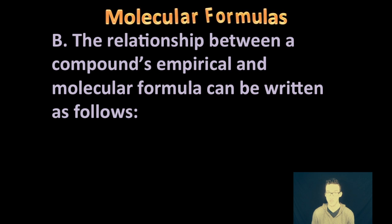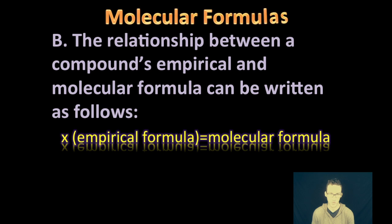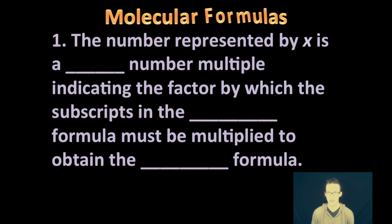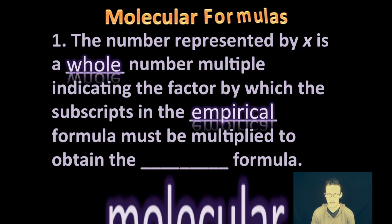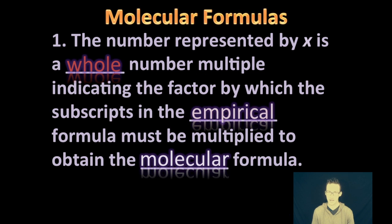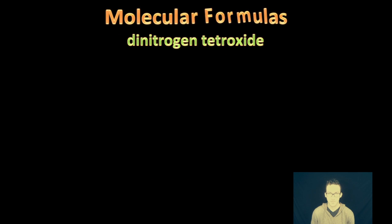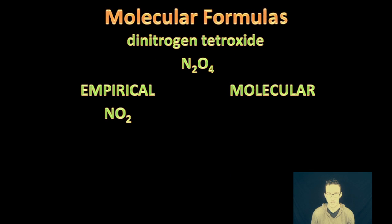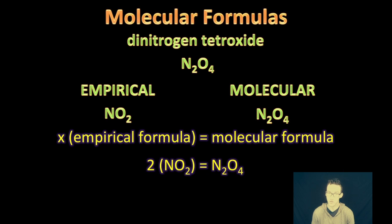So what is the relationship between the compound's empirical or molecular formula? We can write it as follows here on your screen where whatever your empirical formula is, we just have to multiply it by some number X to get our molecular formula. And that number X is going to be a whole number multiple in which we multiply the empirical formula by to get its actual or true molecular formula. So going back to this example of dinitrogen tetroxide N2O4, the empirical formula for this compound showing the smallest whole number ratio would be NO2. However, the true formula for this compound is N2O4. So how do we go from empirical to molecular? Well, we just take the empirical formula of NO2, multiply it by the whole number factor of two to get N2O4.